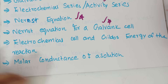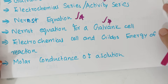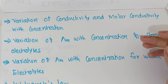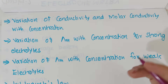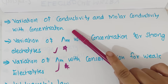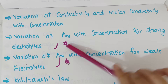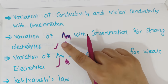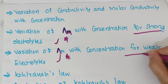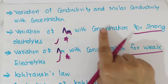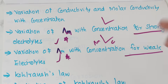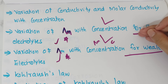Electrochemical cells give energy of the reaction. What is the molar conductance of a solution? What do you mean by limiting molar conductivity? This is very important. Variation of conductivity and molar conductance with concentration — variation of lambda m. What do you mean by lambda m? This is limiting molar conductivity. Lambda m with concentration — strong electrolyte and weak electrolyte. You can learn the graph of lambda m versus concentration — the strong electrolyte and weak electrolyte graph.